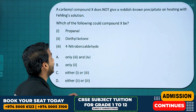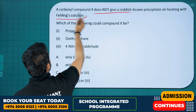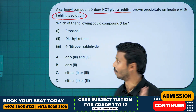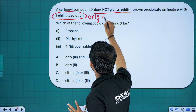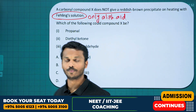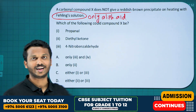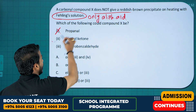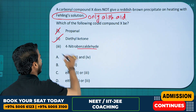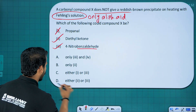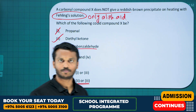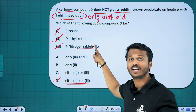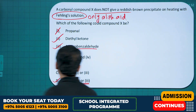A carbonyl compound X does not give a reddish brown precipitate with Fehling's solution. Fehling's solution is given by only aliphatic aldehydes. So the question is: which compound is not an aliphatic aldehyde? Propanal is an aliphatic aldehyde, so that's not our answer. Diethyl ketone and benzaldehyde — benzaldehyde is an aromatic one. So either option two or three cannot give the Fehling's test. Since it is a ketone and an aromatic aldehyde, they do not respond to Fehling's test. So either two or three is the answer.